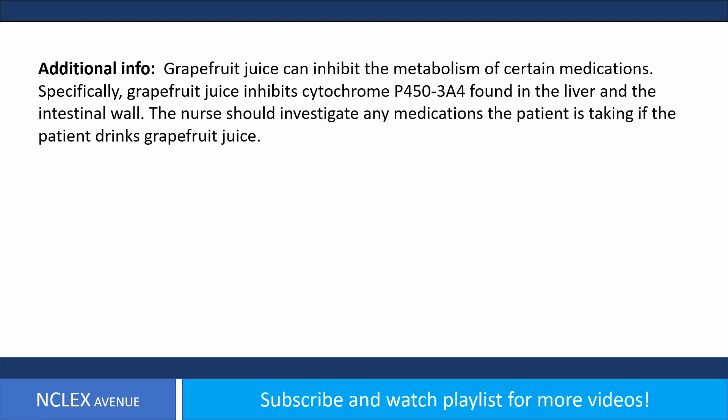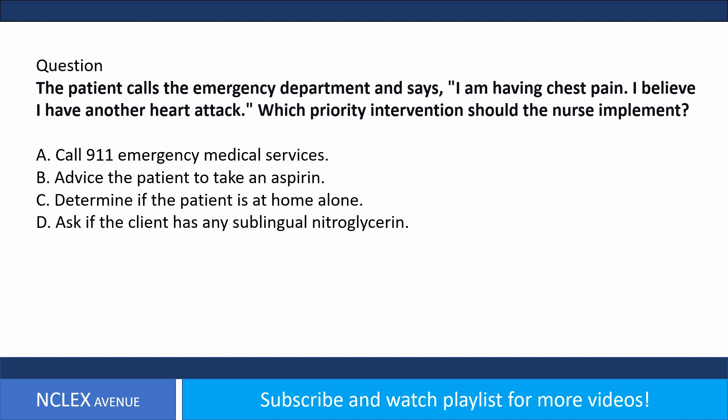Question. The patient calls the emergency department and says, I am having chest pain. I believe I have another heart attack. Which priority intervention should the nurse implement? A. Call 911 emergency medical services. B. Advise the patient to take an aspirin.